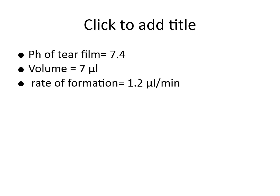Some key points to remember: the pH of the tear film is 7.4, the volume is 7 microlitres, and the rate of formation is 1.2 microlitres per minute.